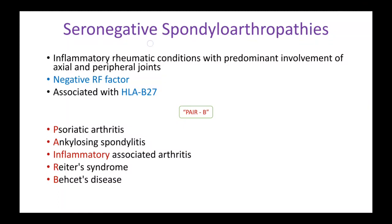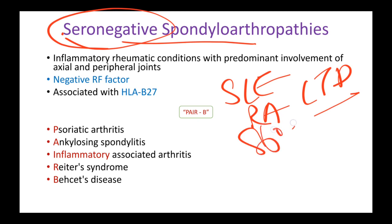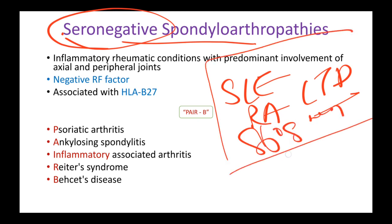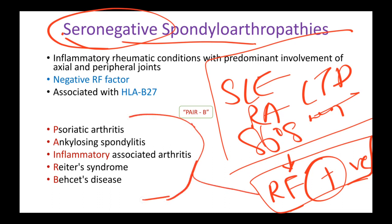In this video, let's talk about seronegative spondyloarthropathies. Seronegative means that conditions involving joints — such as rheumatoid arthritis, systemic lupus erythematosus, many connective tissue disorders, and Sjögren's — usually test positive for rheumatoid factor. But in some conditions, that test is negative. Rheumatoid factor is negative, which is why they are called seronegative.